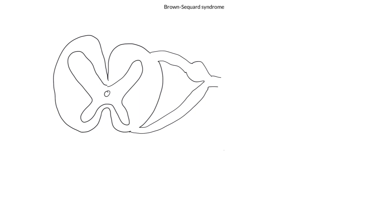In Brown-Séquard syndrome we have a lesion — which I'm going to show in red — that has destroyed one half of the spinal cord. This could be a sharp lesion or a blunt lesion. For our purposes we shall say that it has destroyed the one half of a single cord segment. Note that the lesion encompasses not only the spinal cord itself but also the dorsal and ventral roots, because you relatively rarely get something affecting the cord without also affecting the adjoining roots.